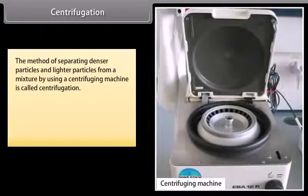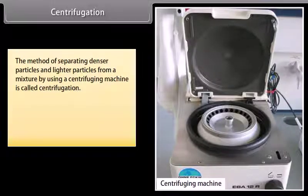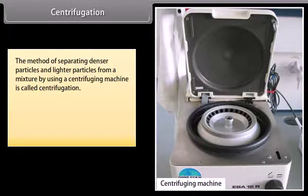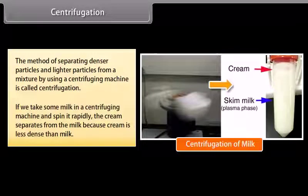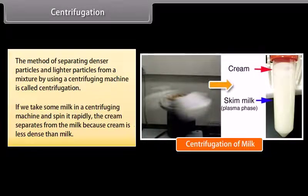Centrifugation is the method of separating denser particles from lighter particles in a mixture using a centrifuging machine. For example, if we take some milk in a centrifuging machine and spin it rapidly, the cream separates from the milk because cream is less dense than milk.